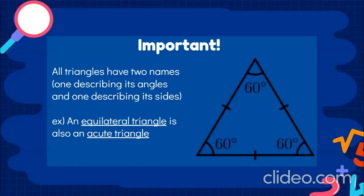It's important to note that all triangles have two names: one describing its angles and one describing its sides. As you can see on the right, this is an equilateral triangle, but it's also an acute triangle as all of its angles are less than 90 degrees.